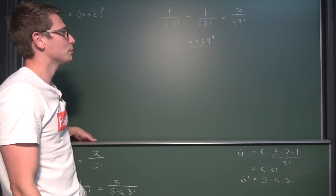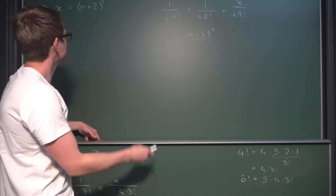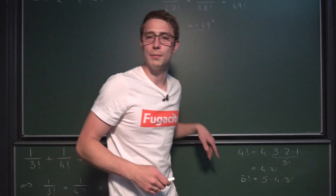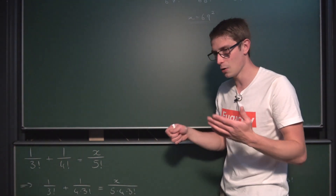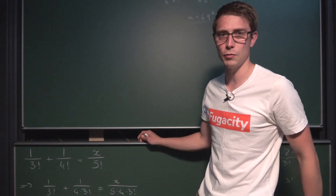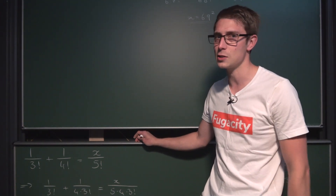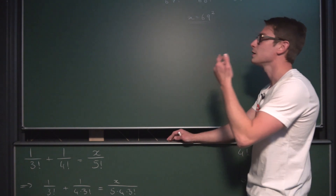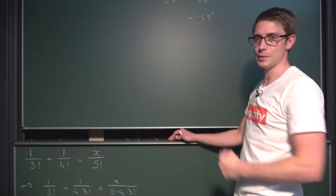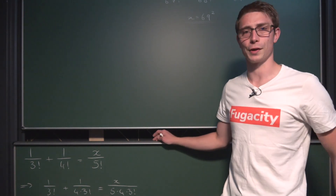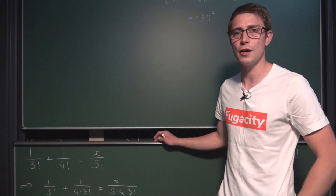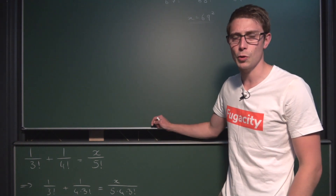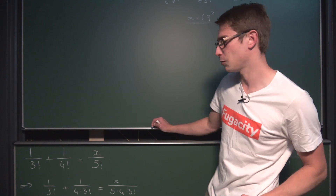Now I was thinking a bit further. This is all about natural number inputs. But what about negative 1? That's a case where all of this doesn't work out. What about other numbers, like 1 half — non-integer values, non-positive integer values? Then it gets a little bit funky.